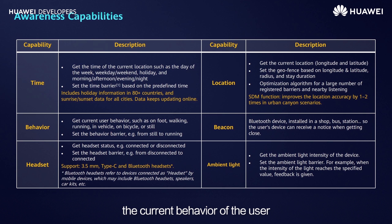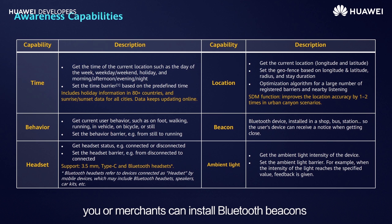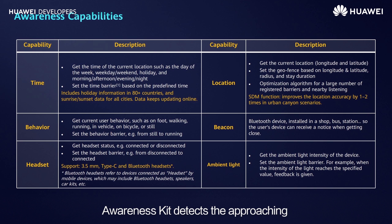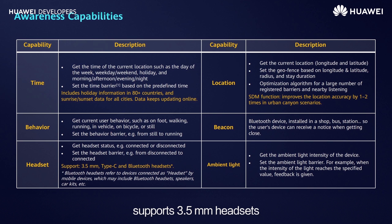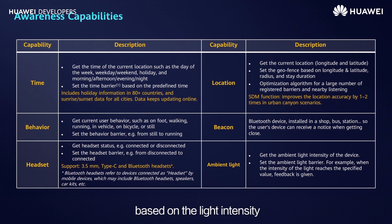With the behavior capability, Awareness Kit helps you obtain the current behavior of the user, including walking, running, cycling, or being still. With the beacon capability, you or a merchant can install Bluetooth beacons in-store or in other places in advance. When a user with a mobile phone is close to the Bluetooth beacon, Awareness Kit detects the proximity so that you can recommend a service to the user. Awareness Kit's headset capability supports 3.5mm headsets, Type-C headsets, and most Bluetooth headsets in the market. With the ambient light capability, Awareness Kit helps you obtain the current light intensity value or set barriers based on light intensity.